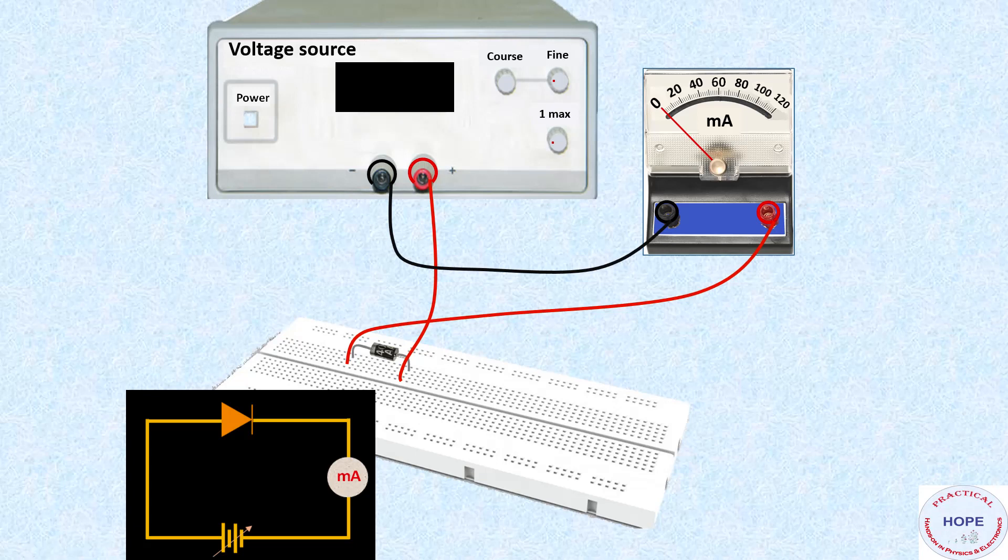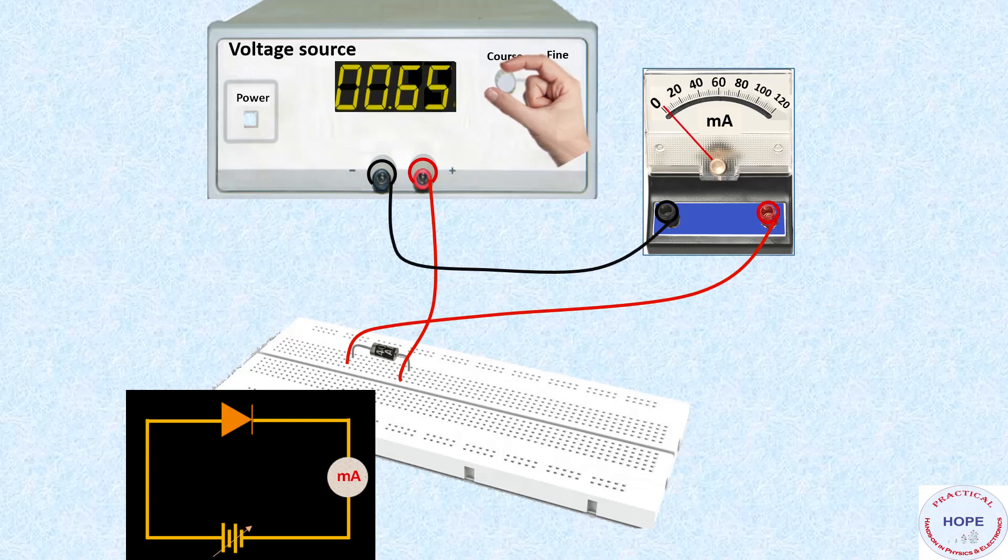Now we'll switch on the power and increase the voltage in small steps. So till 0.65 volts, no significant variation in current is observed.